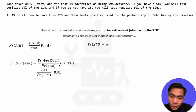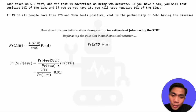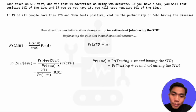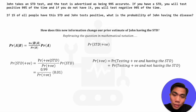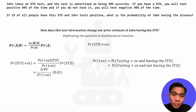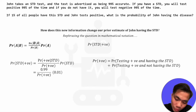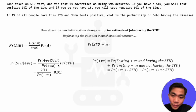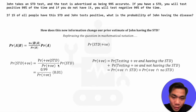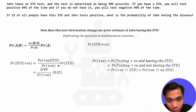The probability of testing positive is the sum of the probabilities of testing positive and having the STD, plus the probability of testing positive and not having the STD — those are the only two ways we can test positive. Describing that in mathematical notation, it's the probability of testing positive intersected with having the STD, plus the probability of testing positive intersected with not having the STD.